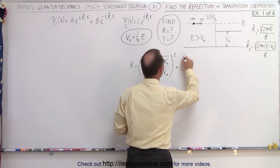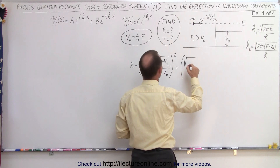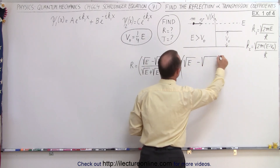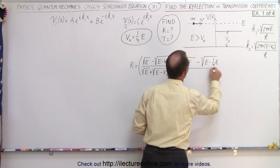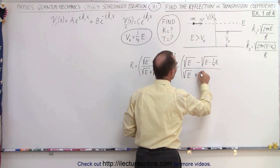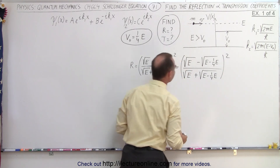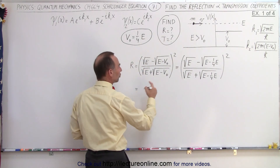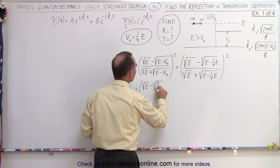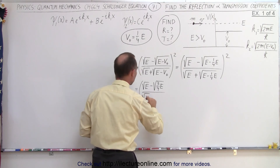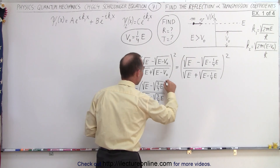All we have to do here is replace V by one quarter the energy. So this gives us the square root of V minus the square root of E minus one quarter E, and over here that becomes the square root of E plus the square root of E minus one quarter E, the whole thing squared. This becomes equal to the square root of E minus the square root of three quarters E, over the square root of E plus the square root of three quarters E, the whole thing squared.